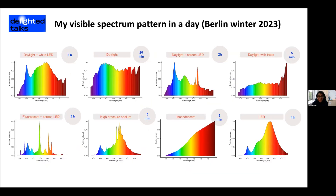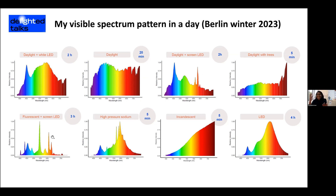To illustrate this, I looked at what my visible spectrum pattern in a day looks like in the 21st century — in Berlin in winter in 2023. When I start my day I have a mix of daylight and white LED; not so much light at home at 8 am because it's winter. When I sit next to a window or go outside I get a full spectrum daylight exposure — about 20 minutes in my day. I come to the office and have a mix of daylight and LED light from my screen, perhaps two hours. A lunchtime walk through trees shows a different daylight spectrum pattern.